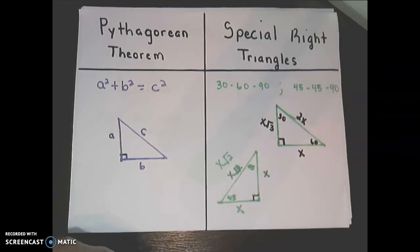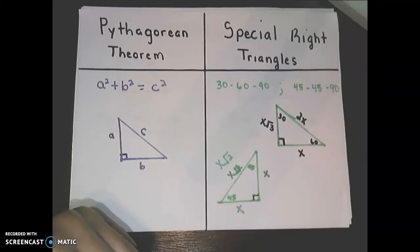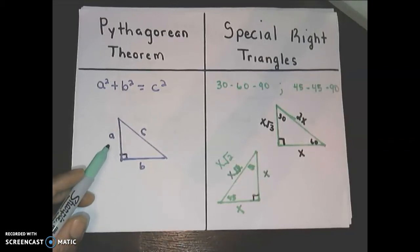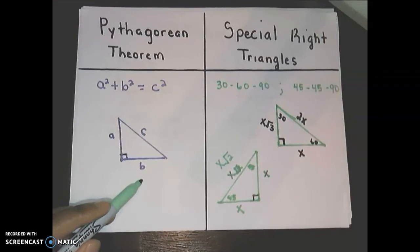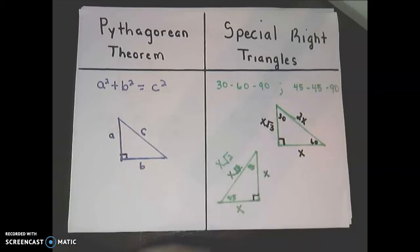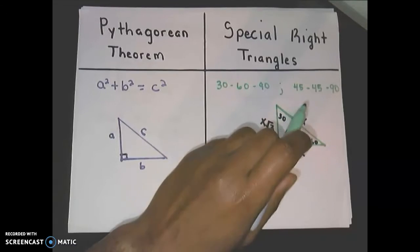As we know, the Pythagorean theorem is a squared plus b squared equals c squared. A is going to be one of your legs, b is one of your legs, and c is going to be the hypotenuse. Our special right triangles are either 30-60-90 or 45-45-90.